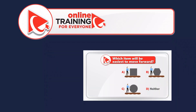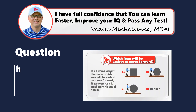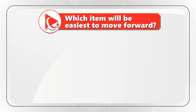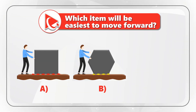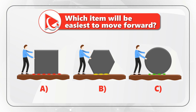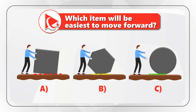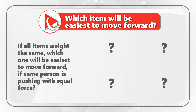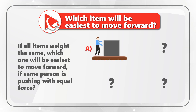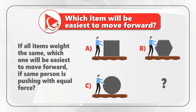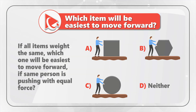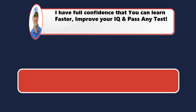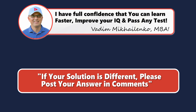Now I have a question for you to practice your skills. We have three different scenarios of a person moving an object — choices A, B, and C. If all items weigh the same, which object would be easiest to move forward if the same person is pushing with equal force? You need to select one out of four possible choices: A, B, C, or choice D, neither one. When you solve this challenge, please make sure to post your answer in comments so I can give you my feedback. Thanks for participating and good luck!